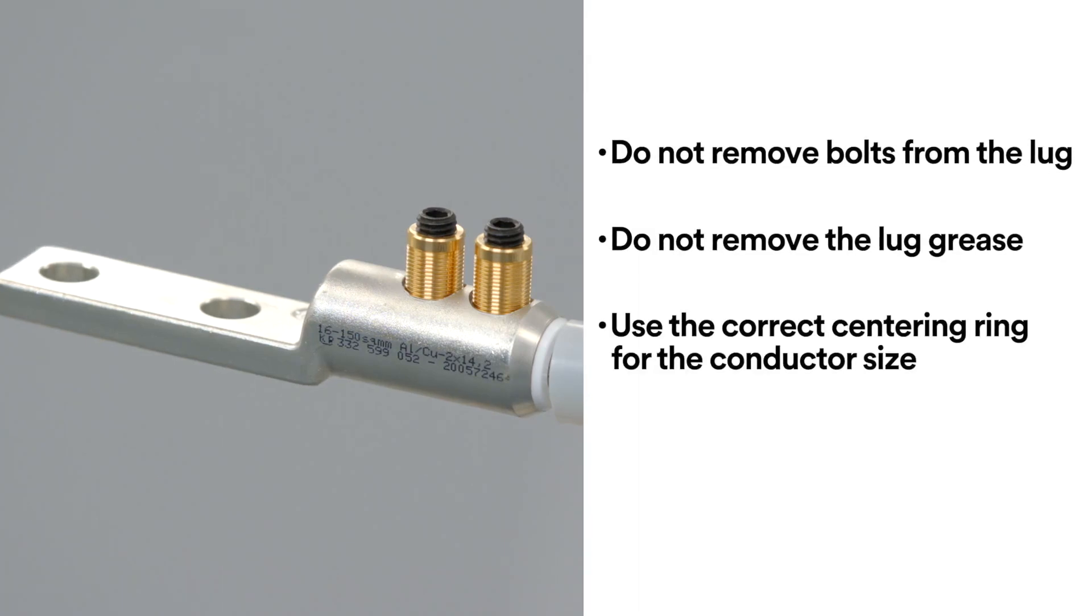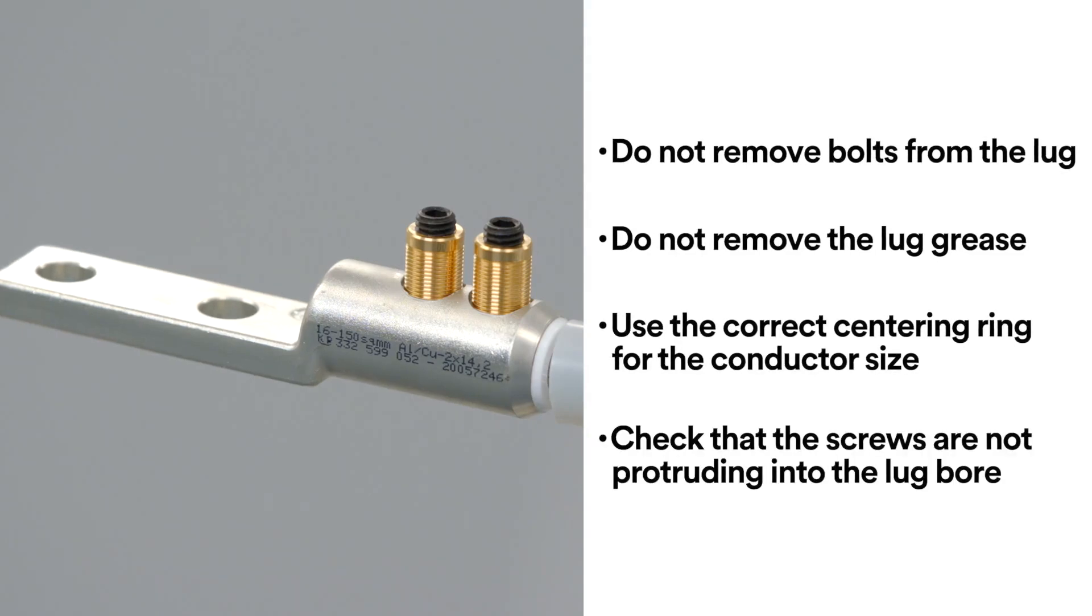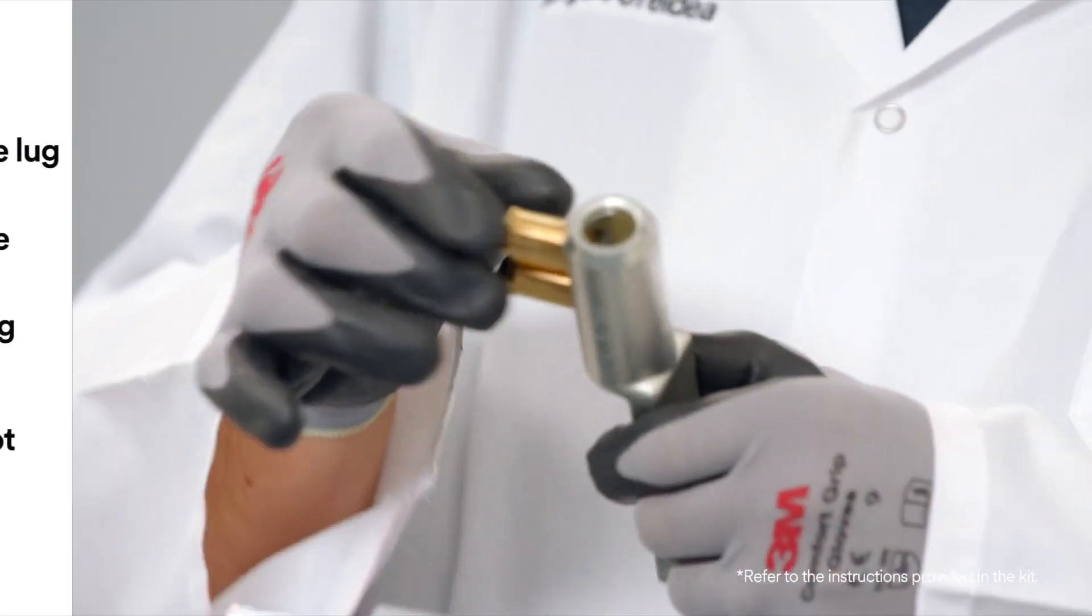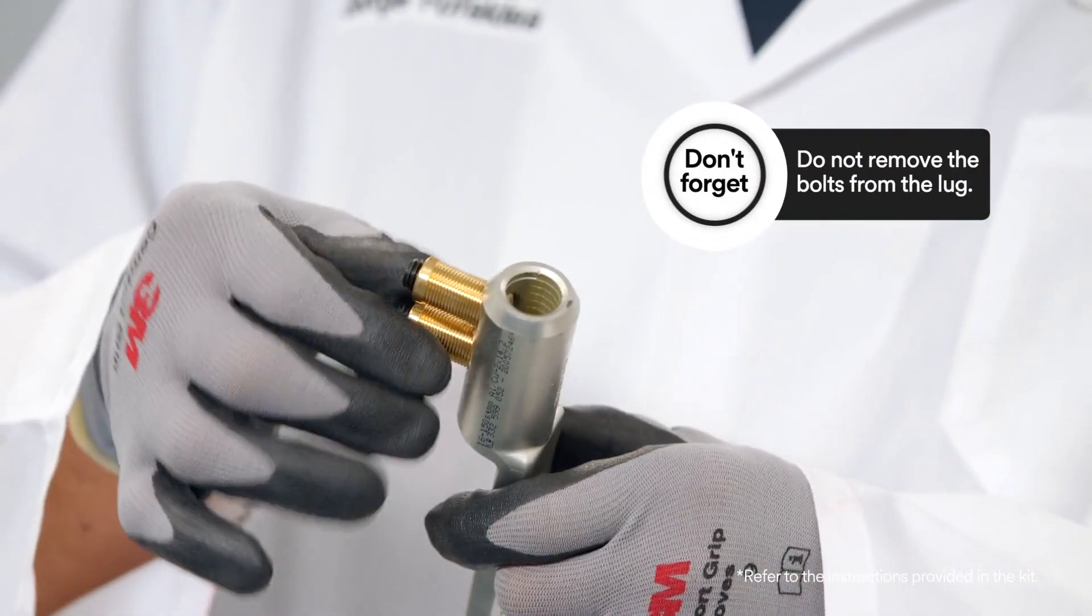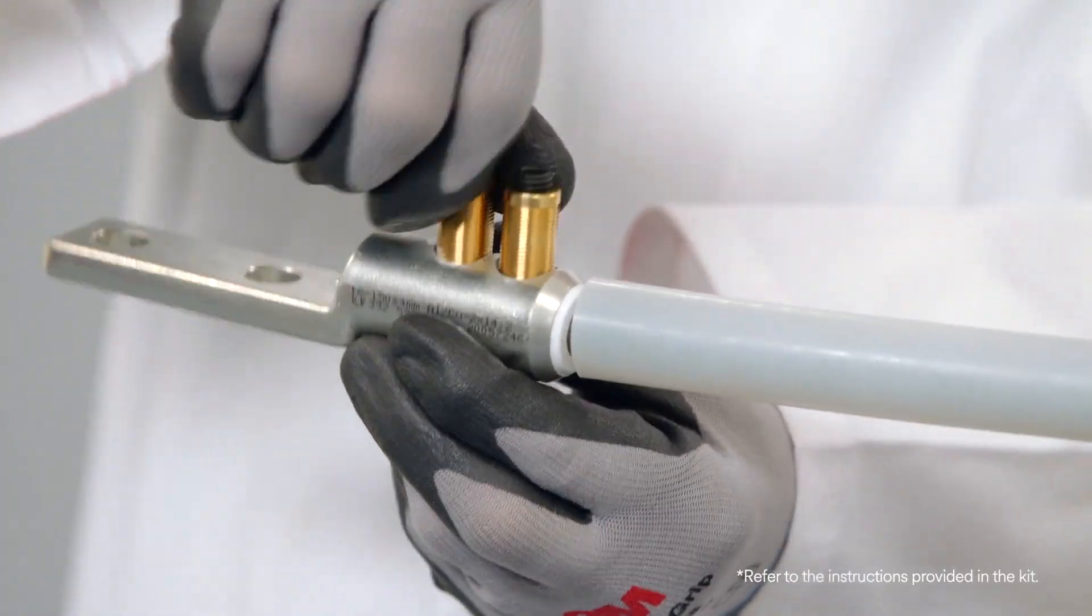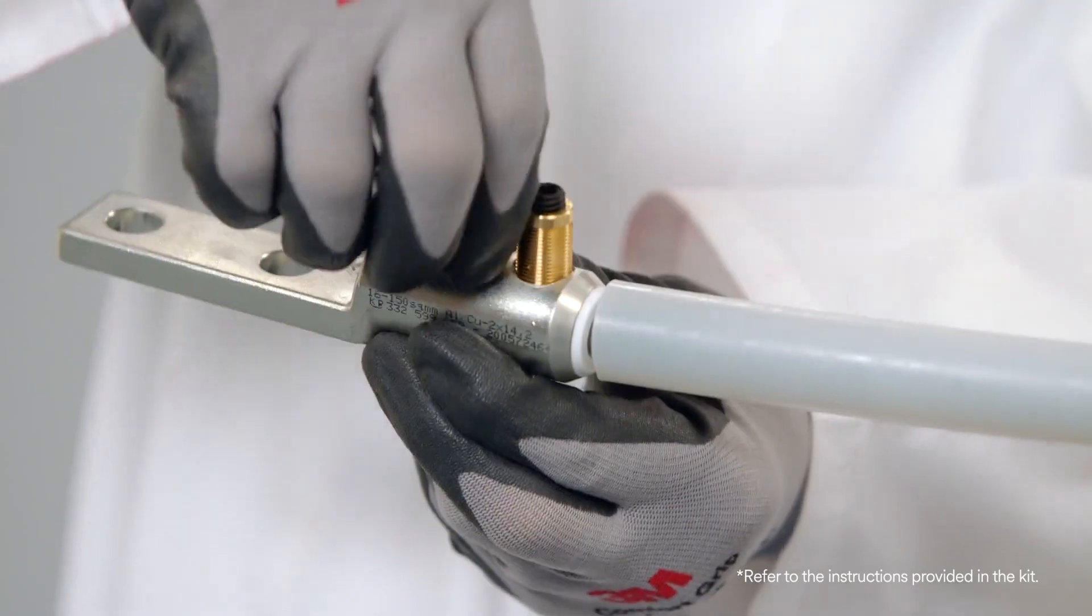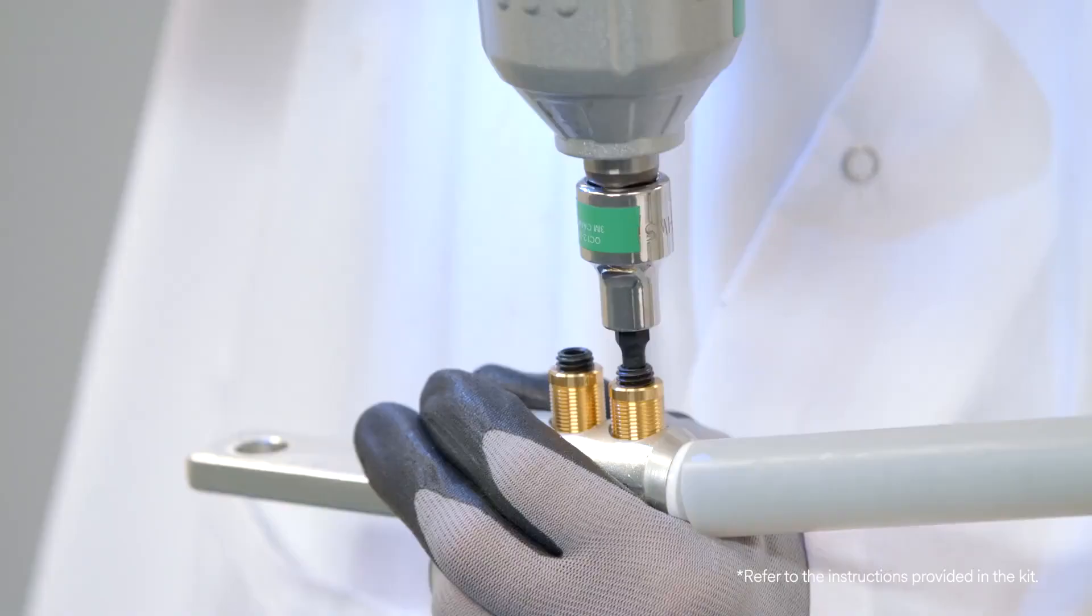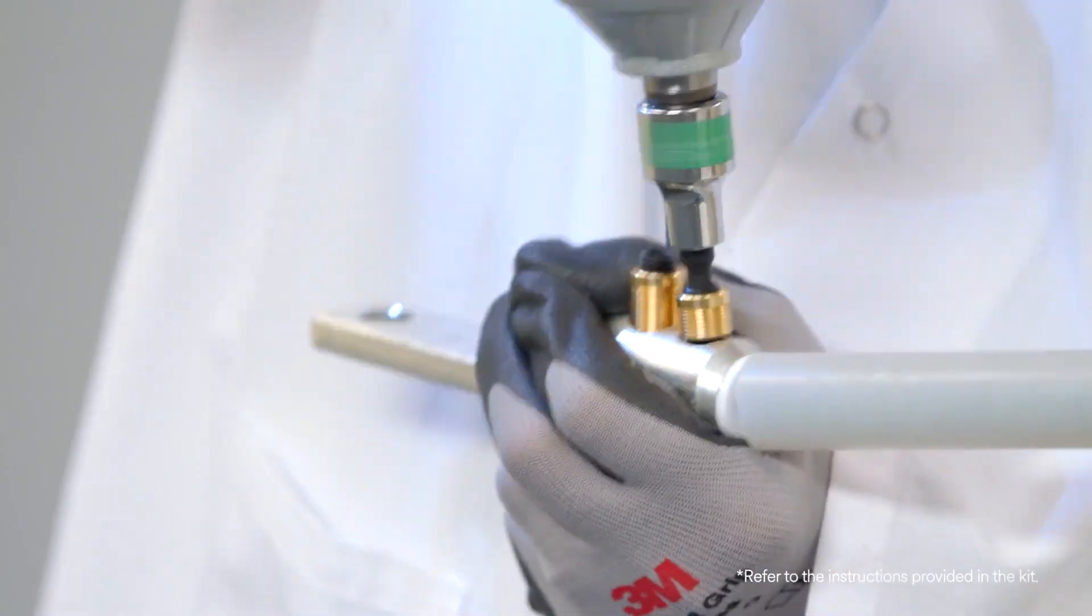Make sure that you use the correct centering ring for the conductor size. You also need to check that the screws are not protruding into the lug bore. Once you've done these checks it's time to install the lug. Follow by hand tightening all bolts into the conductor. Shear the bolts.